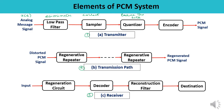After the quantizer, there is an encoder, where the process of digitization is performed. The encoder designates each quantized level a binary code, and sampling is completed as part of this whole process. At the output, we will be getting the PCM signal. This is how you can explain the function of the transmitter.